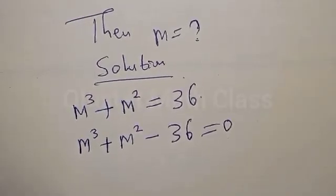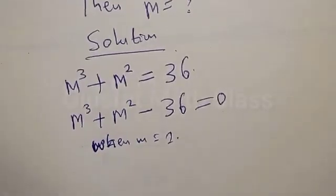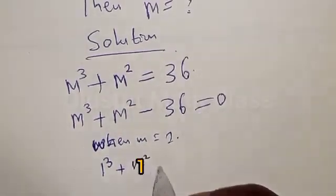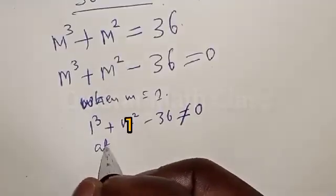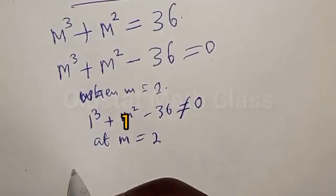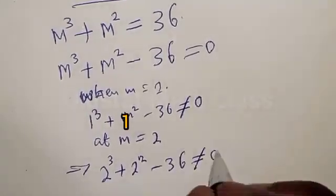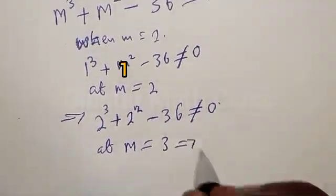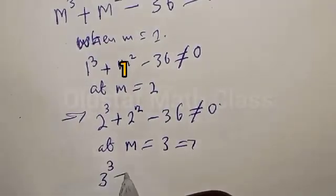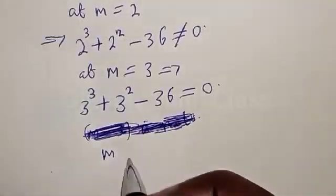Let's find one of the roots of this equation. Testing m equals 1: 1 cubed plus 1 squared minus 36 is not equal to 0. Testing m equals 2: 2 cubed plus 2 squared minus 36 is not equal to 0. Testing m equals 3: 3 cubed plus 3 squared minus 36 is equal to 0. Therefore m equals 3 is one of the roots.